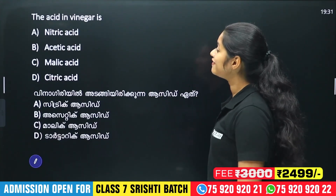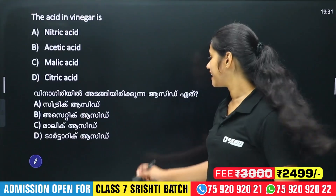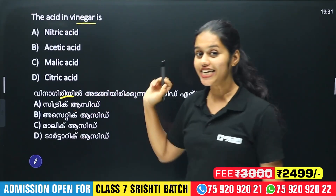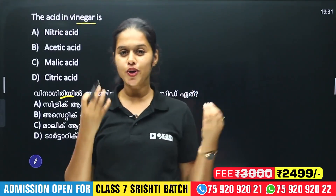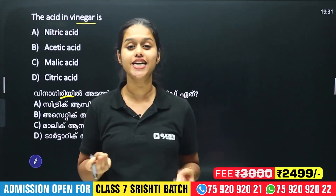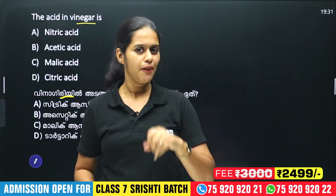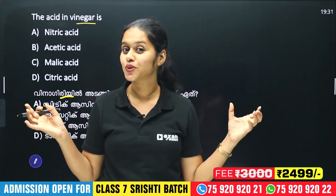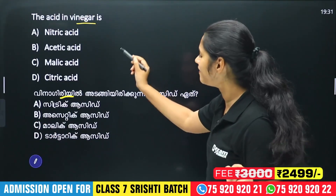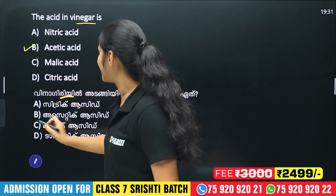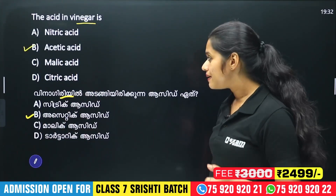The acid present in vinegar is in vinegar. We have to study the textbook. The answer is Option B — Acetic acid. Acetic acid is the acid found in vinegar.